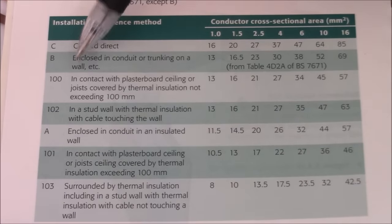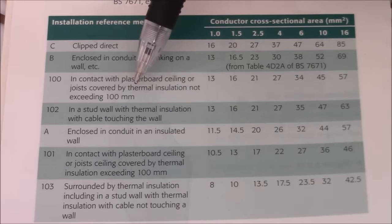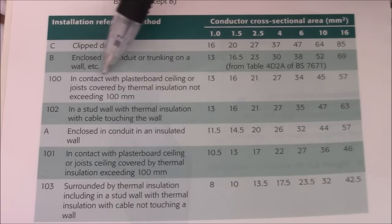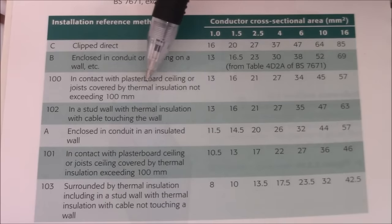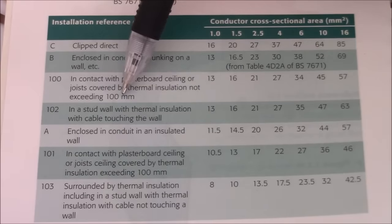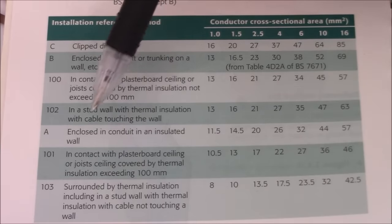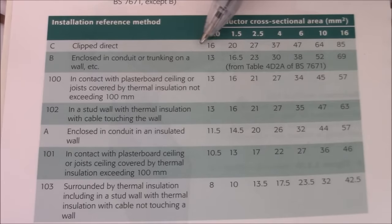And the rest of the reference methods are just variations of the installation with insulation. So basically enclosed in conduit trunking on the wall. Here's in contact with plasterboard covered by thermal insulation not exceeding 100 mm. In a stud wall with thermal insulation and so on.